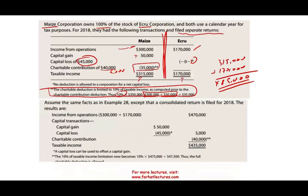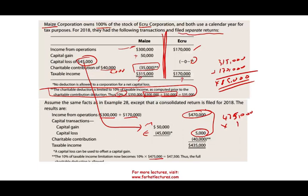Filing a consolidated return, they combine their income: $300,000 plus $170,000 = $470,000 consolidated income. May's has a capital gain of $50,000 and eCrew has a capital loss of $45,000 — now we can use that capital loss. So we have a net capital gain of $5,000. For charitable contributions, we can deduct the full $40,000, because $475,000 times 10% allows up to $47,500, and $40,000 is below that. So consolidated taxable income is $435,000 — compared to $485,000 filing separately. There's a difference and we saved money by consolidating.